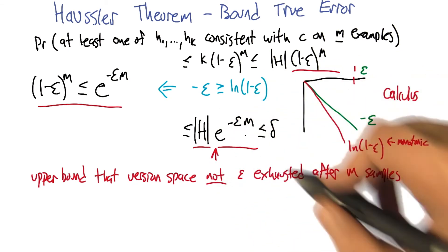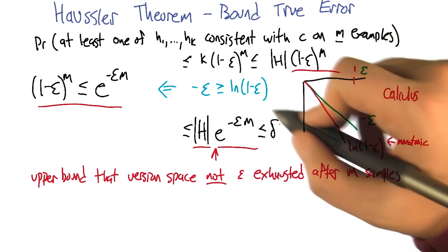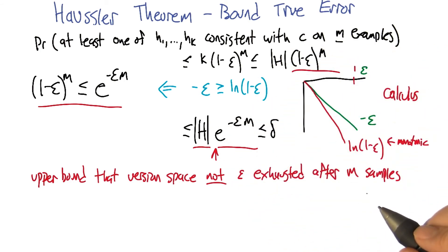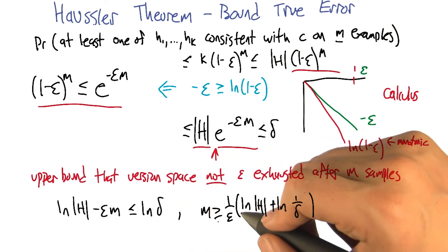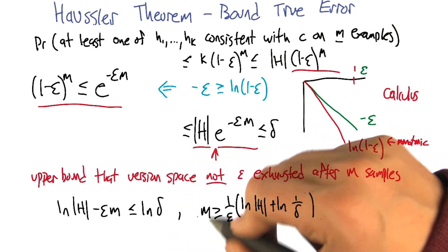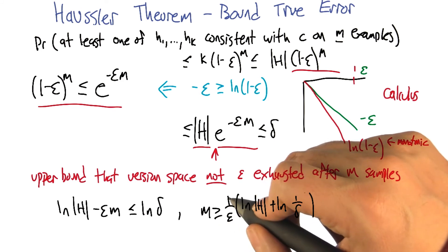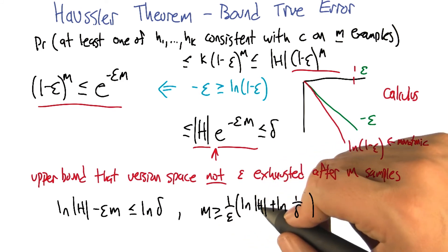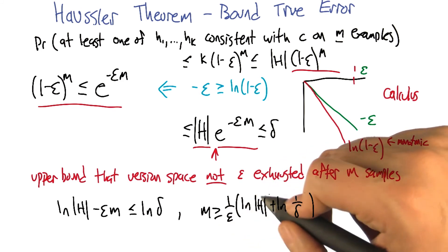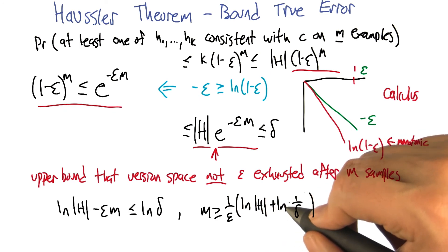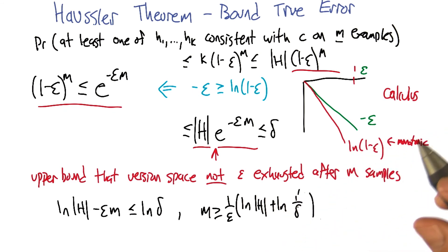So now the last thing we need to do is we can just rewrite this in terms of m. So if we do that, let's see what happens. And so when we're done rewriting that, what we find is the sample size m needs to be at least as large as 1 over epsilon times the quantity, the log of the size of the hypothesis space plus the log of 1 over delta.